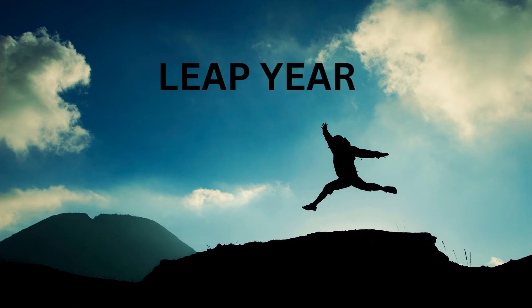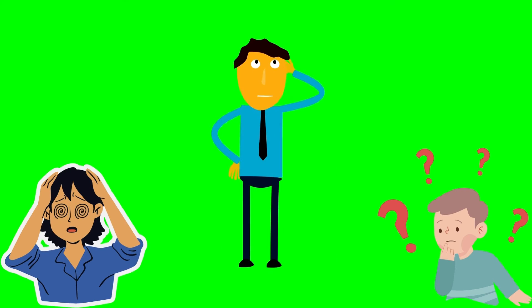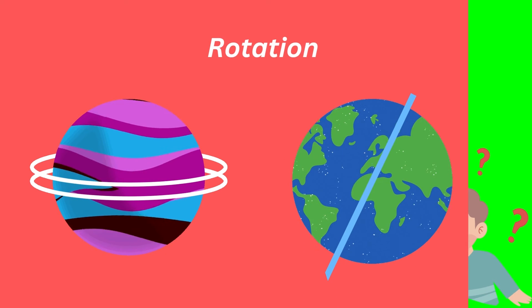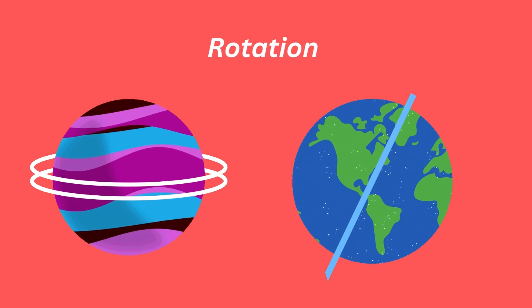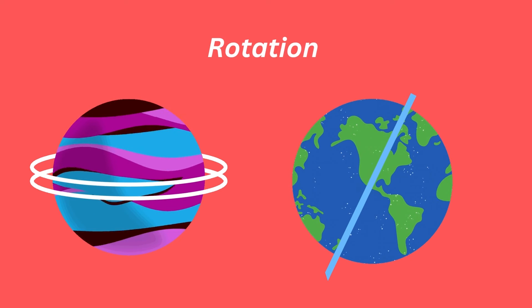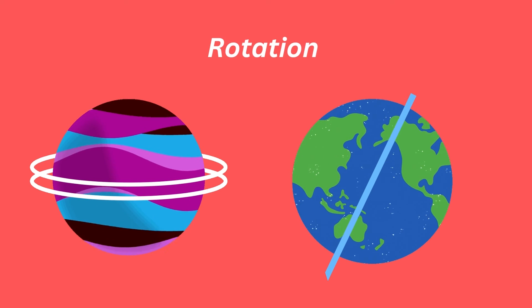Leap year gives us an extra day called leap day. My dear students, don't get confused by the similarities of the words rotation and revolution. In astronomy, the circular movement of an object around a center is called rotation.